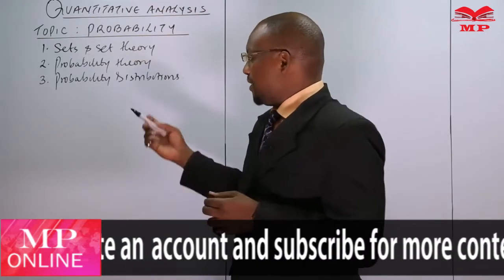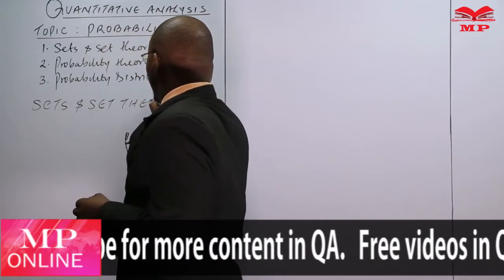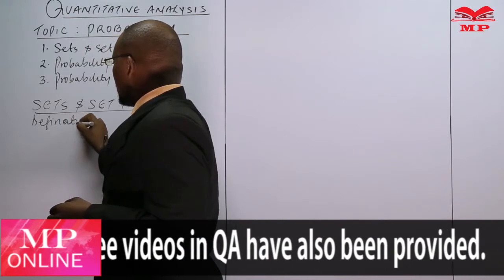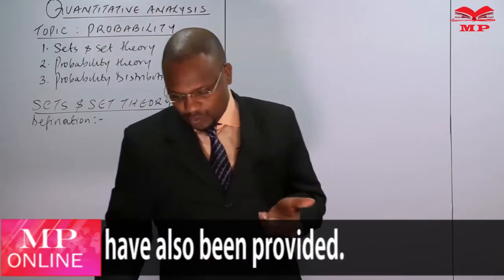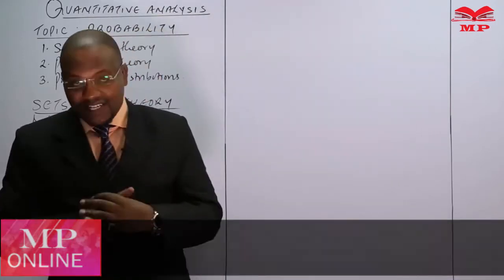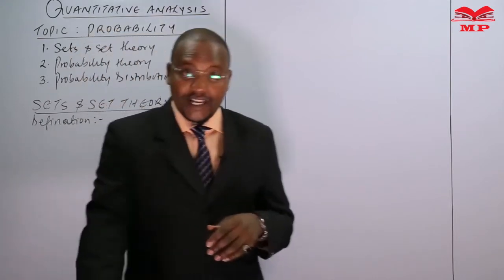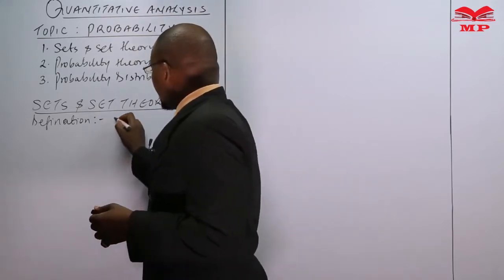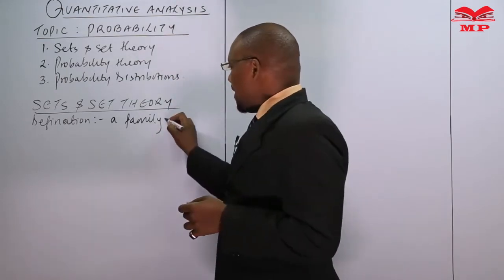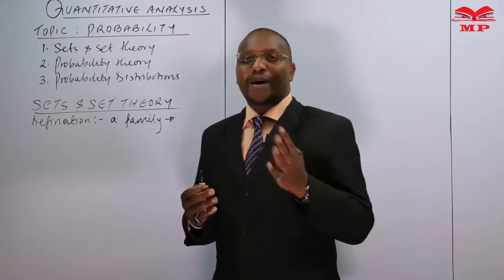Sets and Set Theory. We will begin with the definition of a set, then go to the properties of a set, and then the types of sets. A set is a collection of elements which are precisely defined. For example, we can talk of a family. A family is a set, as it has members who are related but are also different — having the father, the mother, the children — so they make one set.